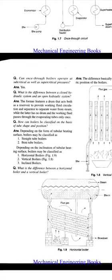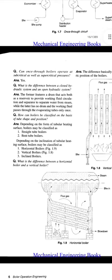Can once-through boilers operate at subcritical as well as supercritical pressure? Yes. What is the difference between a closed hydraulic system and an open hydraulic system? The former features a drum that acts both as a reservoir to provide working fluid circulation and to separate water from steam, while the latter has no drum and the working fluid passes through the evaporating tubes only once.